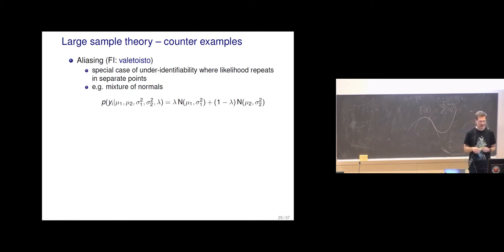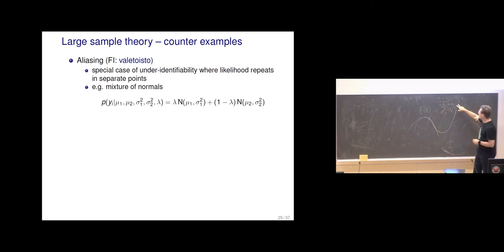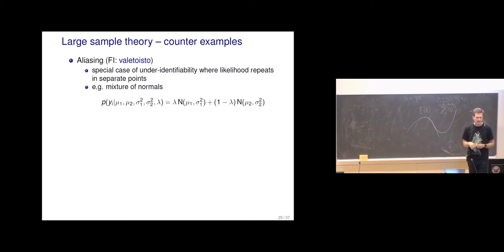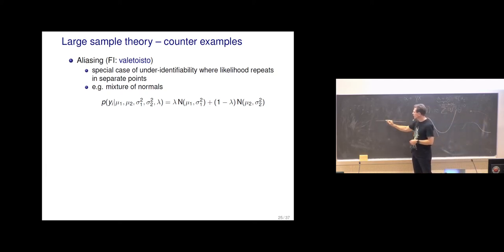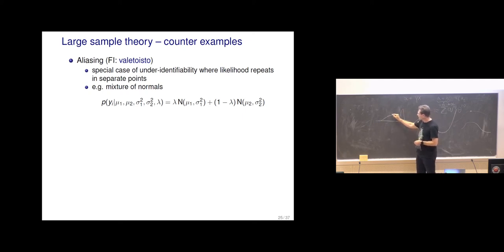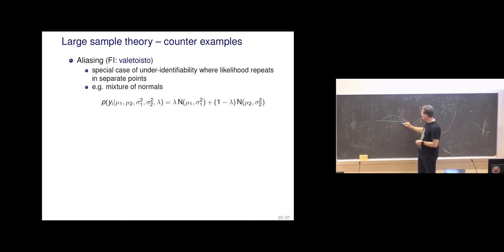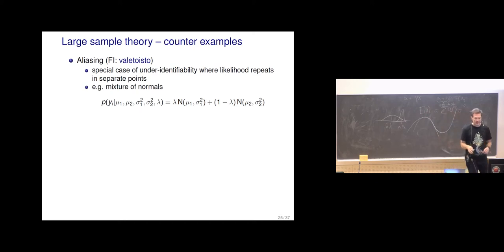A special case of under-identifiability is aliasing, where the likelihood repeats at separate points. In this example, likelihood repeated at points where a+b stayed the same. Another example is a mixture of normals: suppose we have one wide Gaussian and one narrow Gaussian, named Gaussian 1 with parameters mu-1 and sigma-1, and Gaussian 2 with parameters mu-2 and sigma-2, and a mixing parameter lambda — with weight lambda for the first and (1 - lambda) for the second.